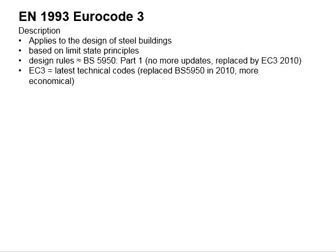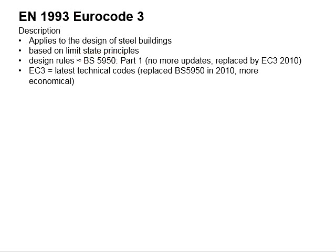Eurocode 3 is said to be more economical than BS 5950, in terms of the factors of safety as well as the methods used to analyze the actions acting on the structures.